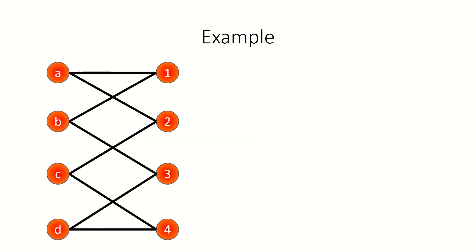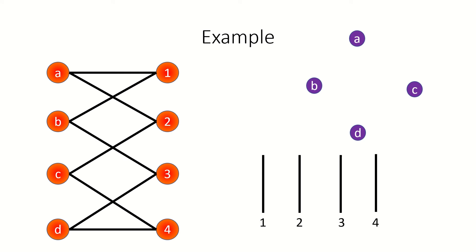As an example, suppose this is the incidence graph of our incidence structure, with vertices A, B, C, and D corresponding to points, and vertices 1, 2, 3, and 4 corresponding to lines. Can you find the incidence structure? First, create our points A, B, C, and D, and our lines 1, 2, 3, and 4. Next, let's look at the vertices in the incidence graph that correspond to lines, and see which vertices they're adjacent to. Those vertices will correspond to the points that a line is incident to in the incidence structure.